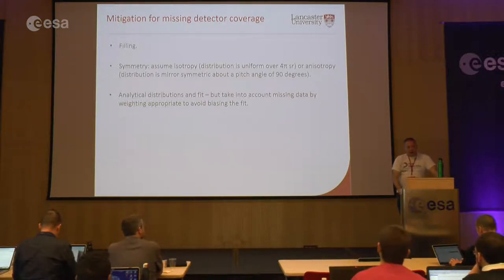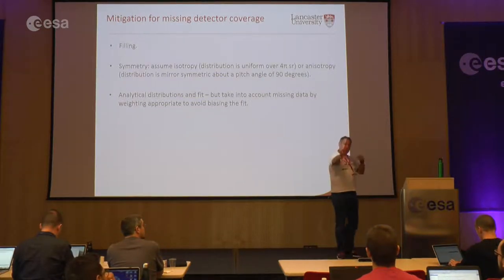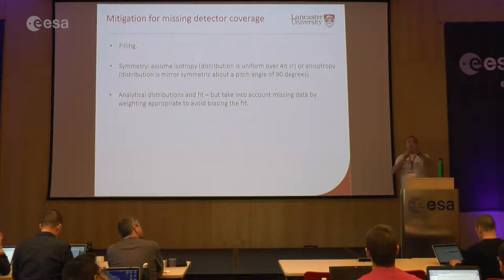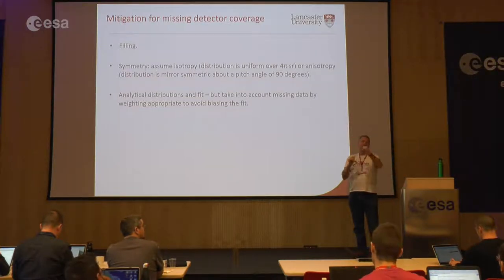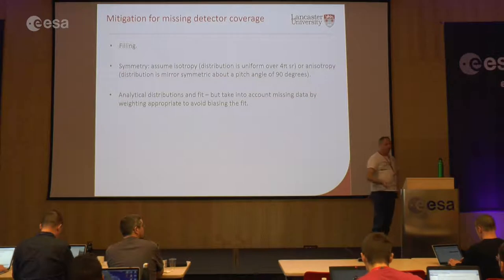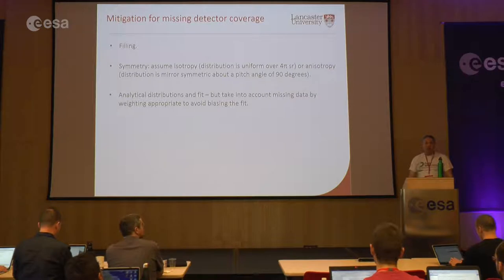Another approach is to use an analytical distribution. Taking the solar wind example with limited coverage that only sees past the beam — you could assume this is a Maxwellian population of protons and doubly-ionized helium moving in a particular direction, then fit that to the distribution you observe. Of course, you have to account for missing data by appropriately weighting the fit so you don't bias it. Both approaches — numerical integration and fitting — have pros and cons.